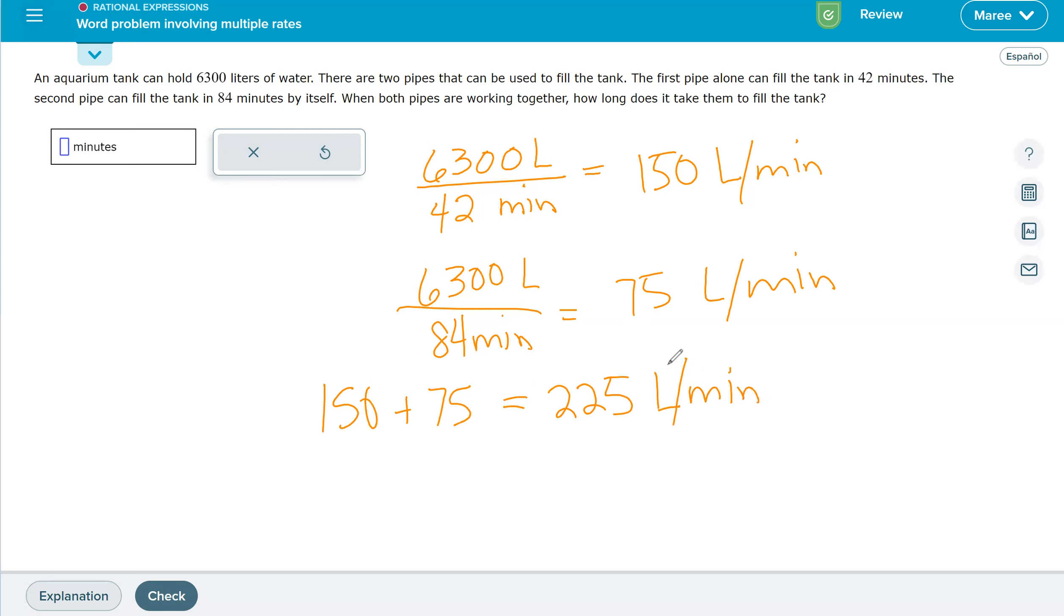And we want to know how long that's going to take to fill a 6,300 liter tank of water. So we have 6,300 liters divided by 225 liters per minute. So that will give us the number of minutes and that will be 28.